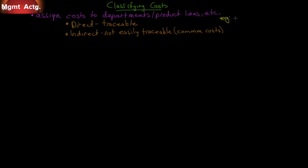For example, if we have a bunch of stores in a region, the salary of a store manager is easily traceable to that specific store. However, the regional manager is a common cost for all the stores. If we went from 12 stores down to 11, we'd eliminate one store manager salary, but you'd still have the regional manager salary — that is common to the region regardless of how many outlets you have. We'll see much more of this in Chapter 11.